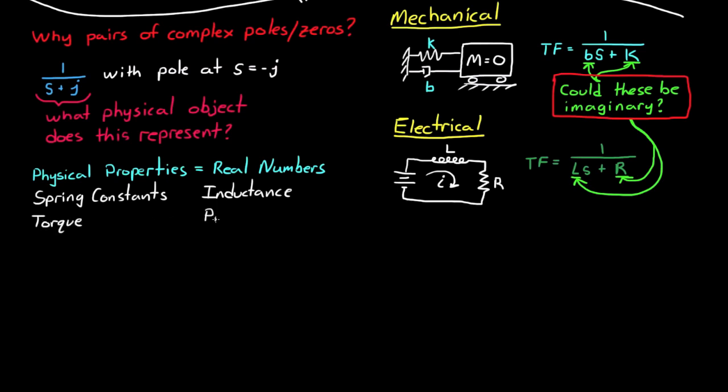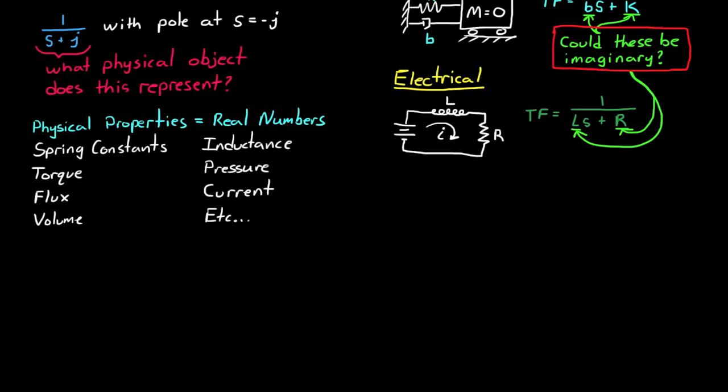So in both of these cases, the coefficients of the transfer function polynomial all have real numbers. And that's because they represent real physical values, like spring constants and inductance and resistance. Other physical properties are things like torque or pressure or flux or current or volume. And all of these have real values. Even if the transfer function has polynomials that have real coefficients, it's still possible to have imaginary roots. But in order to do so, we must have a second order system or higher.